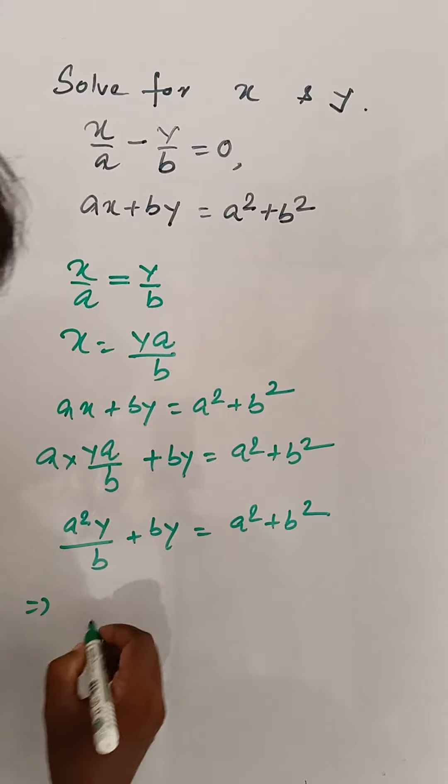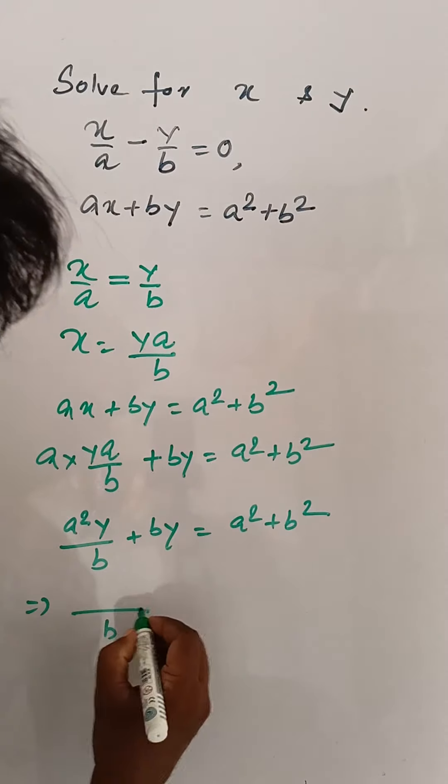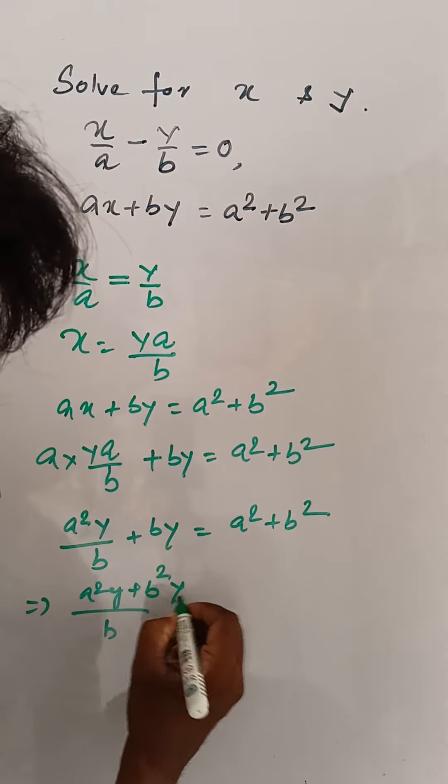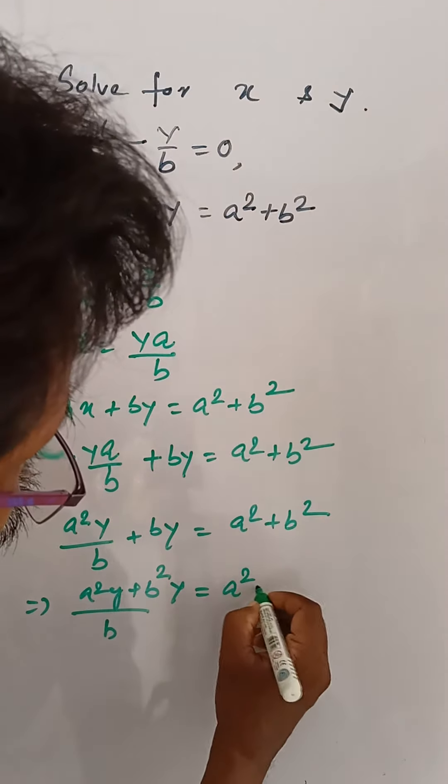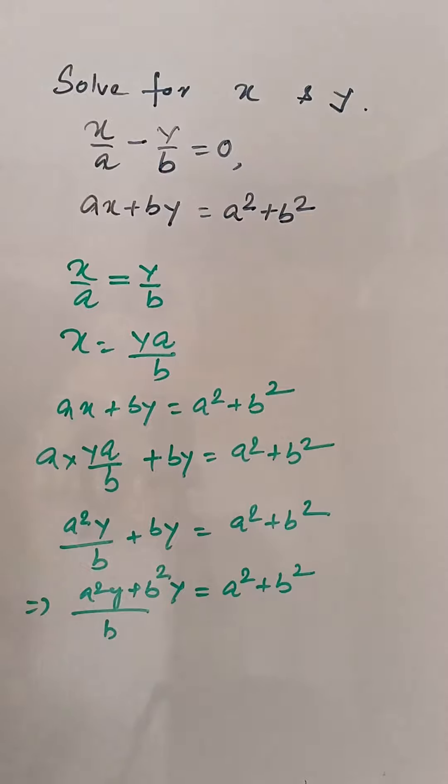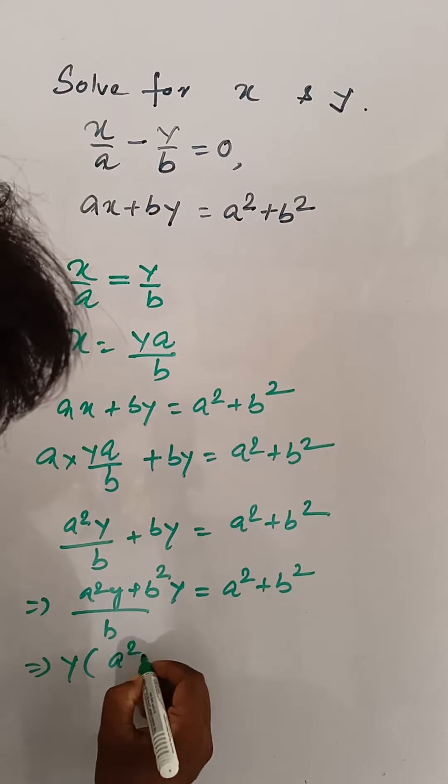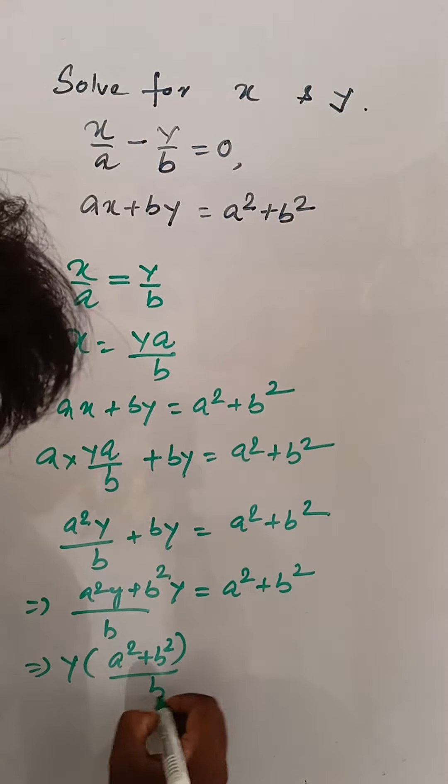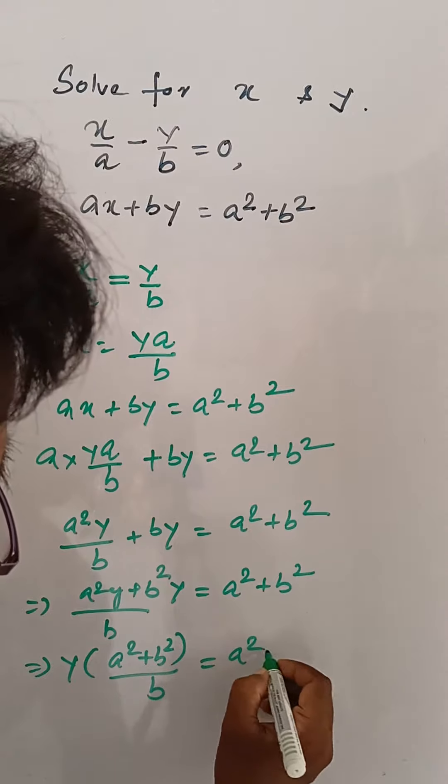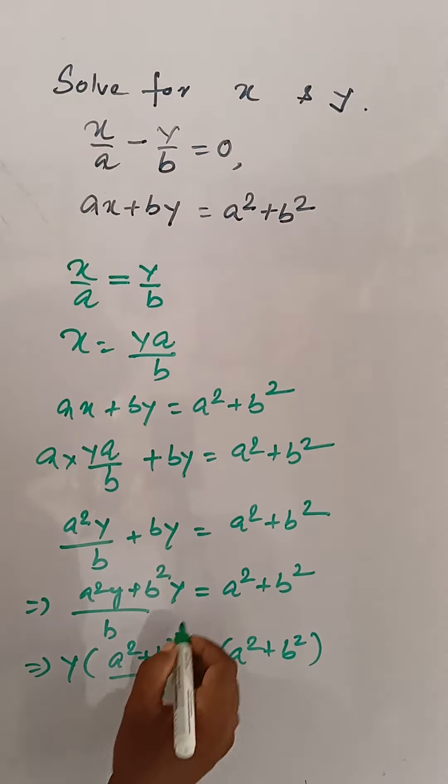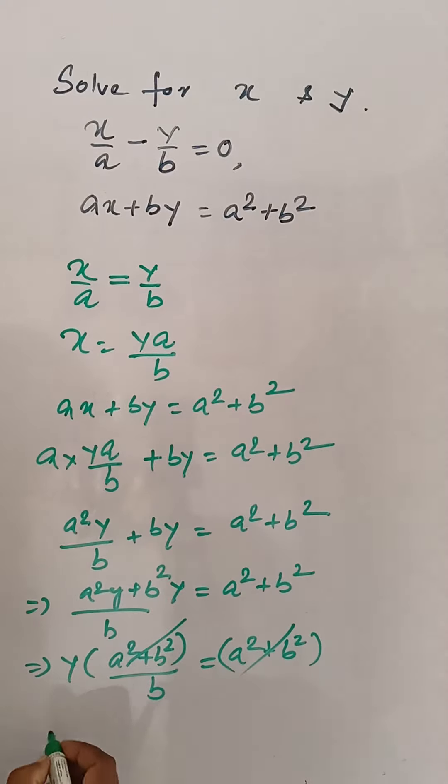Taking b as the common denominator: a²y + b²y = b(a² + b²). Factoring out y: y(a² + b²)/b = a² + b². The (a² + b²) terms cancel on both sides. So y is equal to b.